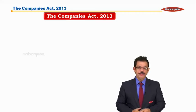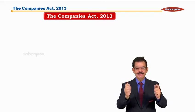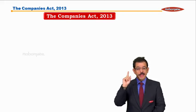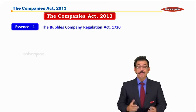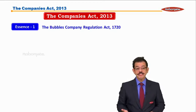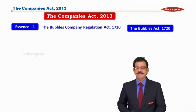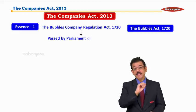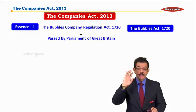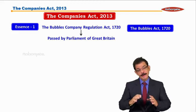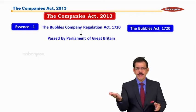Now in this module of the introduction, doh underlying essences hain before we start with the Companies Act 2013. Essence number one: the Bubbles Companies Regulation Act 1720, popularly known as the Bubbles Act 1720, which was passed by the British Parliament in the year 1720. Ab mere ek baat bata ye students — hum padh ke aa rahe hain the Companies Act 2013, doh saal purana act.